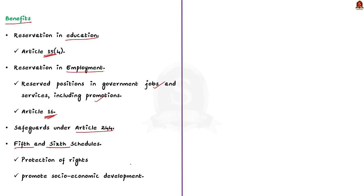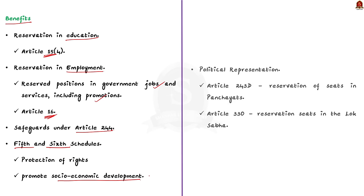These provisions safeguard the rights and promote the socio-economic development of ST communities. Next is political representation: Article 243 ensures reserved seats for Scheduled Tribes in Panchayats, promoting their participation in local governance. Article 330 reserves seats in Lok Sabha for Scheduled Tribes, allowing their representation in the National Parliament. These are the important benefits once included under the Scheduled Tribe list. In this discussion, we have seen the basics about Scheduled Tribes, the process of including a tribe, and the benefits after inclusion.